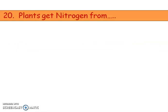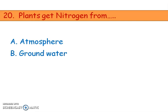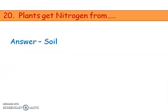Next question: plants get nitrogen from — options are atmosphere, groundwater, soil, and rain. The right answer is option C, soil. Plants get nitrogen from the soil.